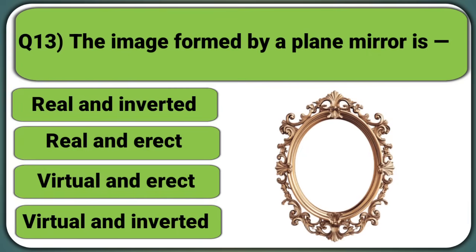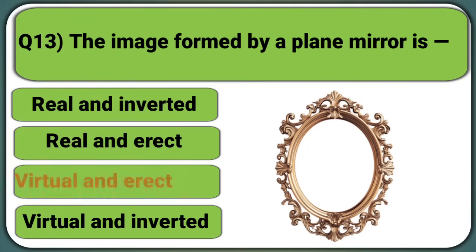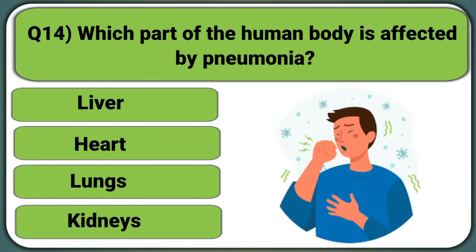The image formed by a plane mirror is: Real and inverted, Real and erect, Virtual and erect, or Virtual and inverted. Answer: Virtual and erect.